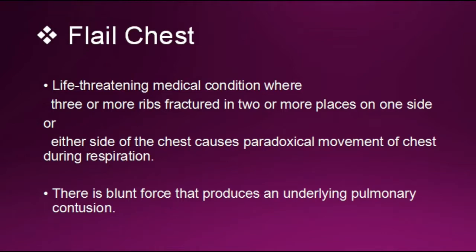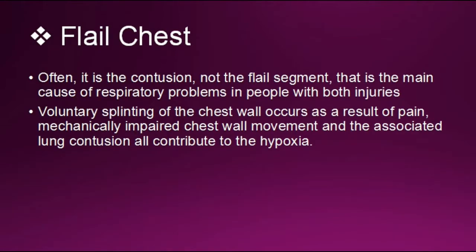Pulmonary contusion is a bruise of the lung caused by chest trauma that interferes with blood oxygenation, which causes hypoxia. Hypoxia means lack of oxygen in tissues. Often it is the contusion, not the flail segment, that is the main cause of respiratory problems in people with both injuries. Voluntary splinting of the chest wall occurs as a result of pain. Mechanically impaired chest wall movement and the associated lung condition all contribute to the hypoxia.